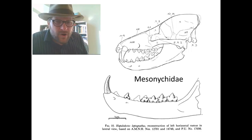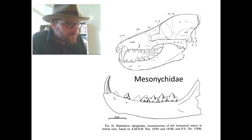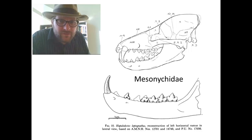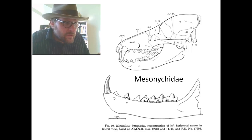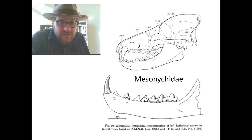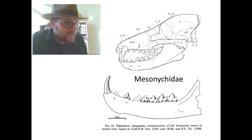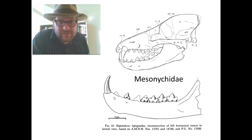One of the most unusual groups are the Mesonychids. The Mesonychids had carnassial teeth on every single one of their molar teeth in their jaws, both upper and lower. This meant they were great at slicing up flesh and eating it. Mesonychids are actually more closely related to pigs and other ungulates than they are to the Carnivora we have today. The Mesonychids went extinct about 34 million years ago.